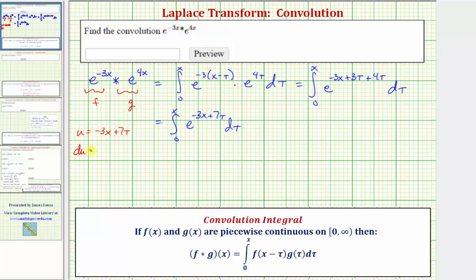So differential u is the derivative of negative 3x plus 7 tau with respect to tau times d tau, which would be 7 d tau. Dividing both sides by 7, we have one-seventh differential u equals d tau.